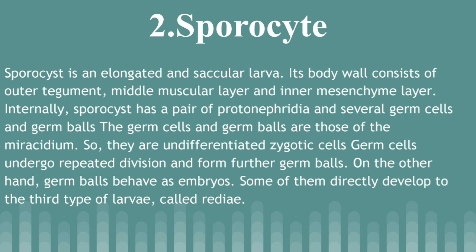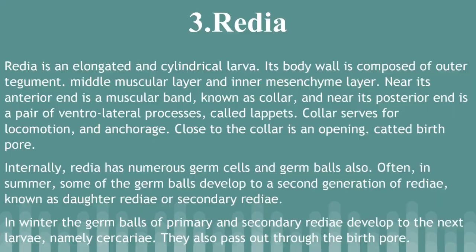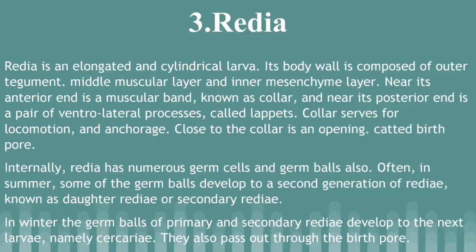Some germ balls directly develop into the third type of larva called Redia. Redia is an elongated and cylindrical larva. Its body wall is composed of an outer tegument, middle muscular layer, and inner mesenchymal layer. Near its anterior end is a muscular band known as the collar, and near its posterior end is a pair of ventrolateral processes called lappets. The collar serves for locomotion. Close to the collar is an opening called the birth pore. Internally, Redia has numerous germ cells and germ balls. In summer, some germ balls develop into a second generation of Redia known as daughter Redia or secondary Redia. In winter, the germ balls of primary and secondary Redia develop into the next larvae, namely Cercariae, which also pass out through the birth pore.